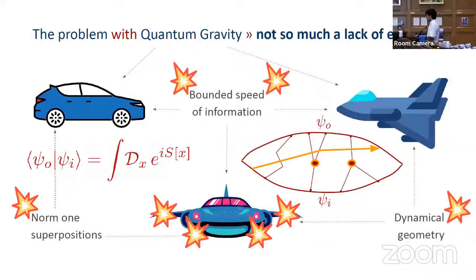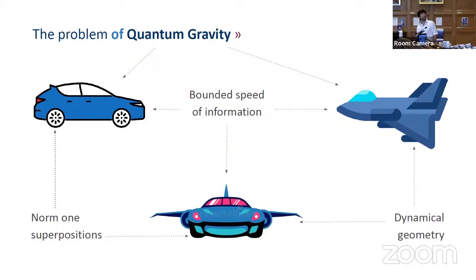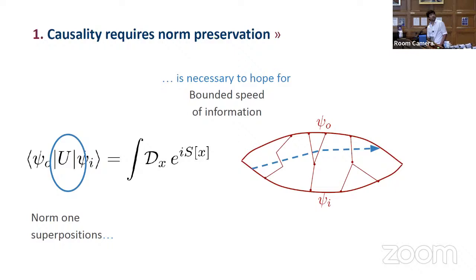We often hear the problem with quantum gravity is that we don't have enough experimental data to fine-tune the details. But these problems don't have anything to do with experimental data — we do have experimental data in the sense that we know we want a car and a plane merged into a flying car. The first issue was that in order to have causality, in order not to have signaling, the precondition is unitarity. So we just have to make sure our evolution is unitary. You can then define a Feynman path integral after that, if you like.